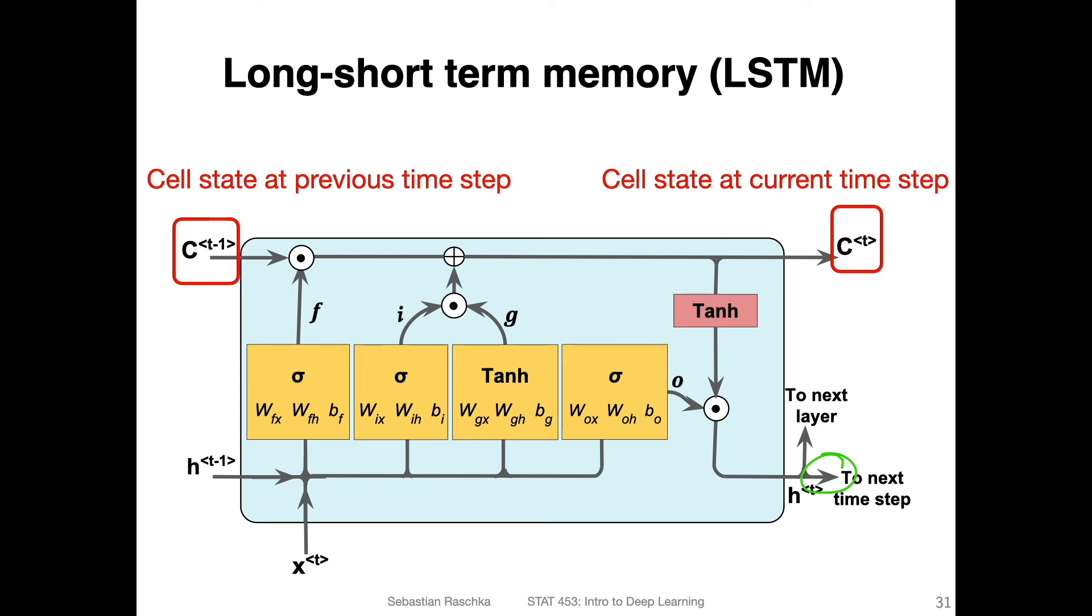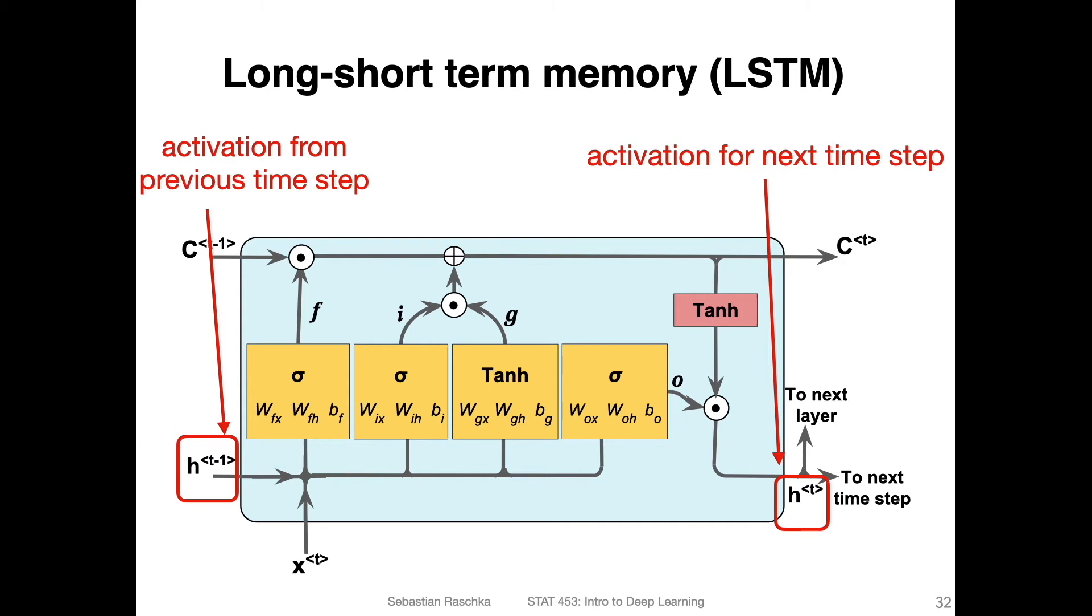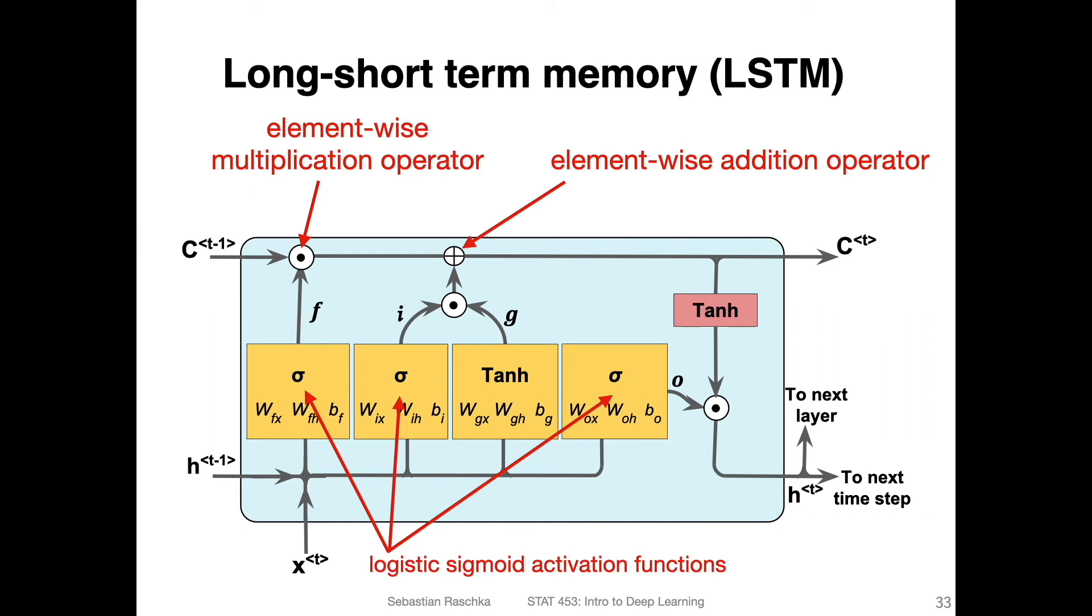Going through things step by step, we have this cell state at a previous time step, and then we update here in this whole computation the cell state and pass it on to the next time step. So there's this so-called state of the LSTM. Another thing we have is the activation from the previous time step, the hidden state from the previous step, and we will pass on the activation computed from this memory cell to the next time step.